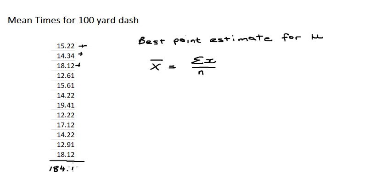So Σx is 184.12 and there are 12 items in our sample. 184.12 divided by 12 is 15.34, and that is our point estimate for the population mean. And that is the best point estimate for our population mean.